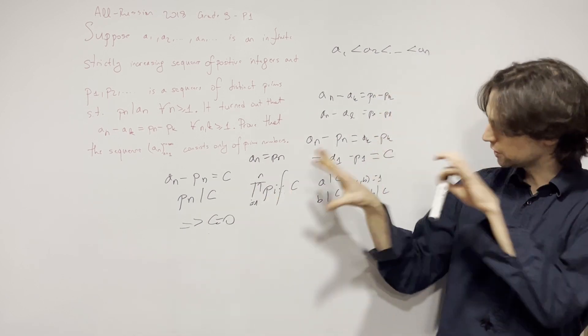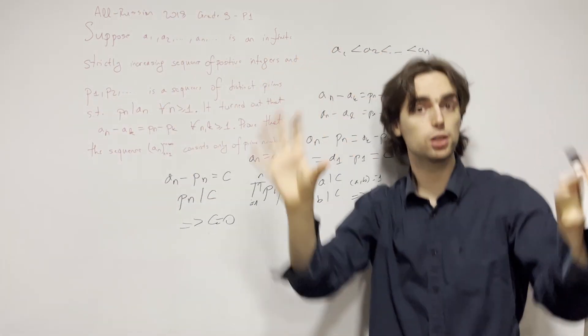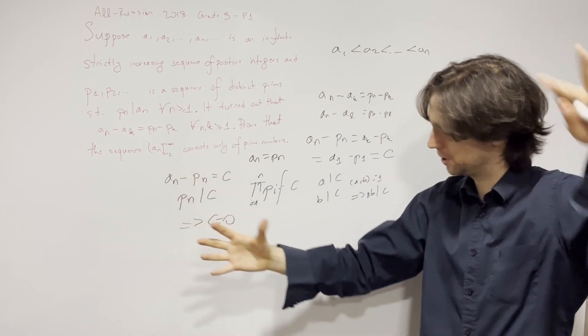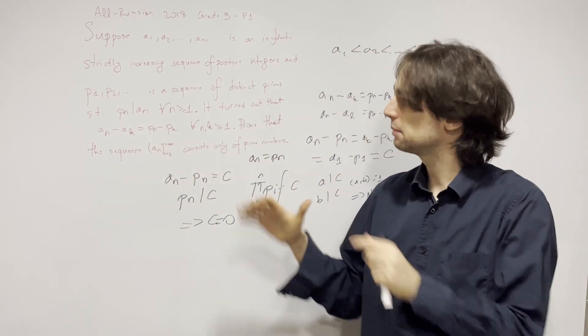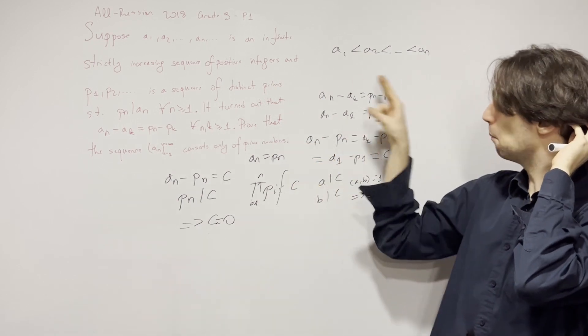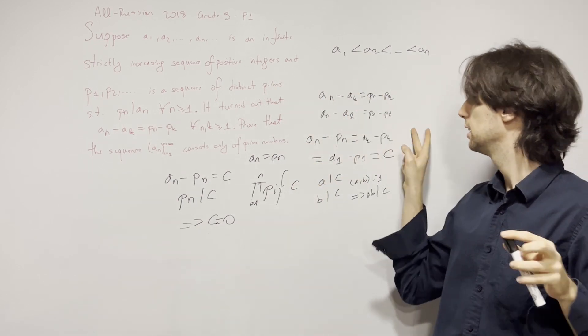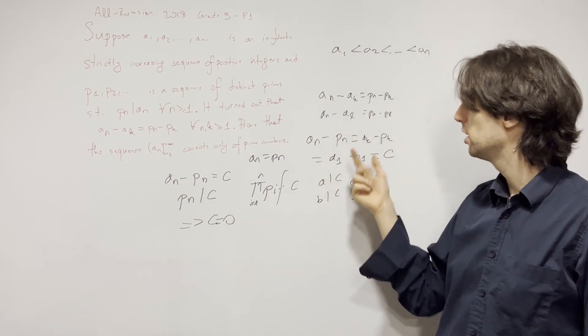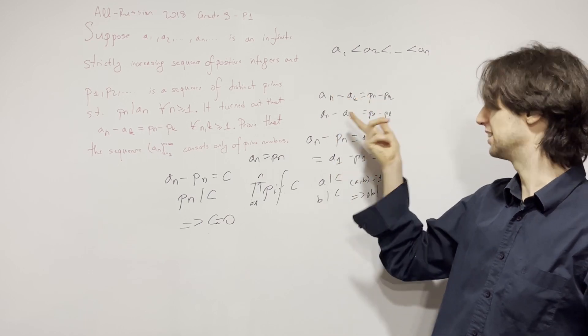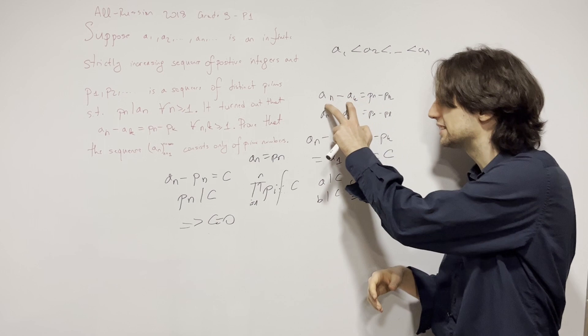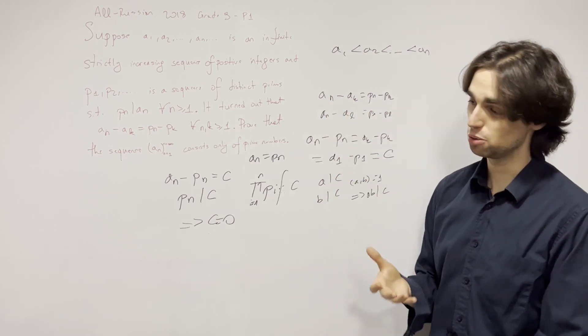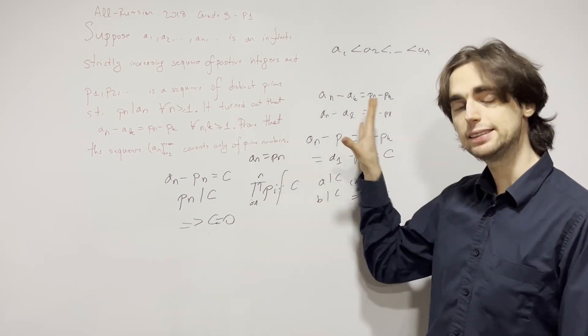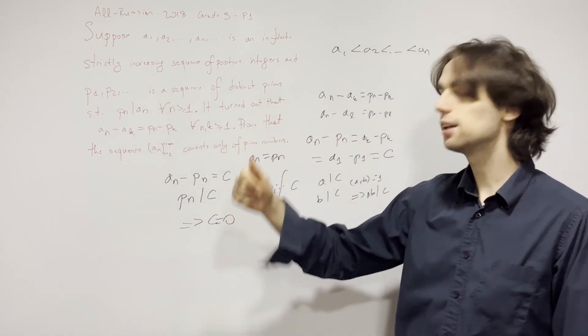This solves the problem. This goes to show that sometimes problems can seem scary—infinite sequences, sequences of primes, what do I do? But in reality, sometimes it's meant to hide something. I think the main part of the problem is looking at this in terms of a constant that doesn't change. This gives you a constant term, and then everything is equal to that.